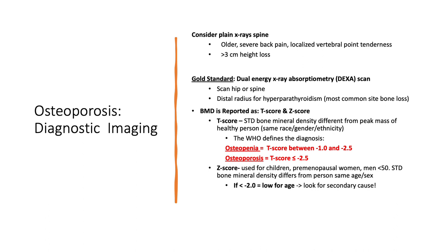Bone mineral density is reported as a T-score or a Z-score. The T-score is the standard bone mineral density compared to peak mass in a healthy person of the same race, gender, and ethnicity. The WHO defines osteopenia as a T-score between negative 1.0 and negative 2.5 standard deviations from the mean. Osteoporosis is defined as a T-score less than negative 2.5 standard deviations from the mean.